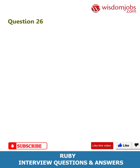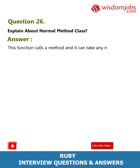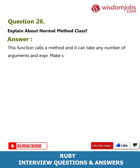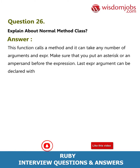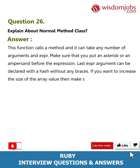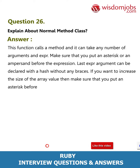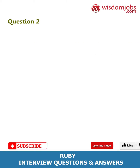Question 26: Explain about the normal method call. Answer: This function calls a method and it can take any number of arguments. Make sure that you put an asterisk or an ampersand before the expression. The last argument can be declared with a hash without any braces. To increase the size of the array value, put an asterisk before the expression. It can also be used to separate the class from its methods.